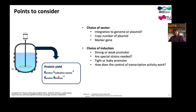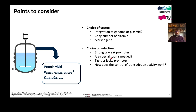Regarding induction, the big question is always whether to use a strong or weak promoter. A strong promoter gives us a lot of protein, but sometimes we overload the folding machinery, particularly with difficult proteins such as those containing disulfide bonds, and then a weak promoter might be preferred. We also have to consider whether special strains are needed. For the T7 system, we need strains that have the T7 polymerase gene in the genome. This is a widely used system so many strains are available, but there are strains that don't have this. Another question is whether we have a tight or leaky promoter — the lac promoter is a bit leaky so there will always be some residual production, and for difficult-to-produce enzymes a tight promoter might be better. Finally, we should consider how the control of transcription activity works.